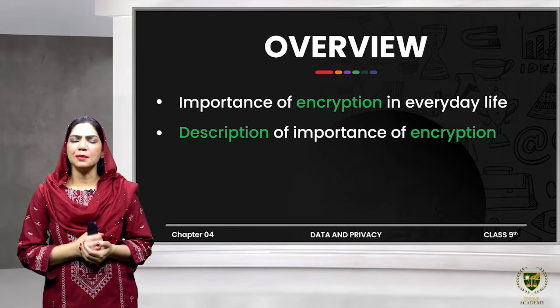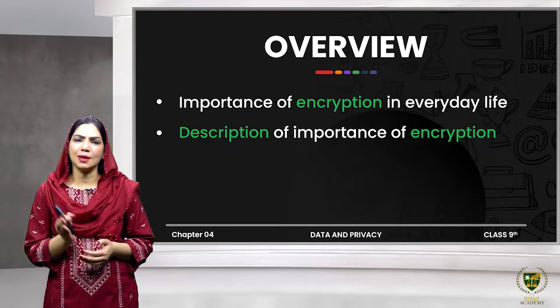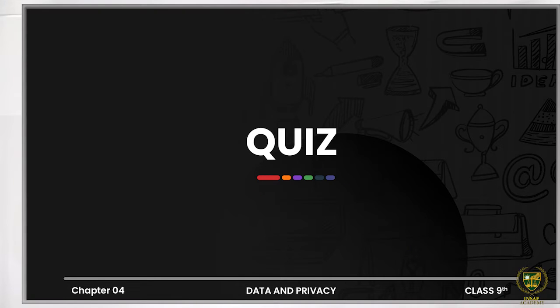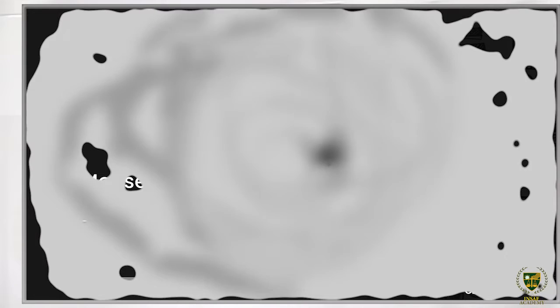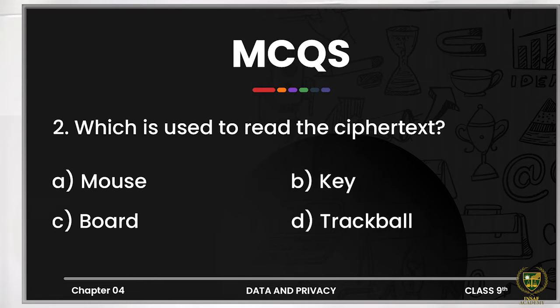So dear students, first we discussed what encryption is — simple encryption — and today we also covered its importance. We also saw at which points encryption is helping us out in today's era. Now let's take a short quiz to check how much of the information shared so far has been saved in your mind and how rapidly you can retrieve that information. The first MCQ on your screen says: 'All aspects of data security are important during ___ of data.' Options are: processing, storage, transmission, or all of these. The correct option is option number 4 — all of these. All aspects of data security are important during all of these: processing, storage, and transmission.